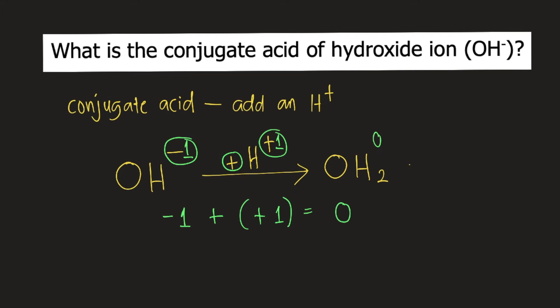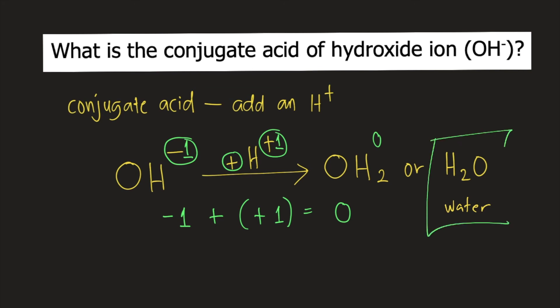You can rearrange the elements and write this as H₂O. So the conjugate acid of hydroxide ion is water. And this is the answer to the question.